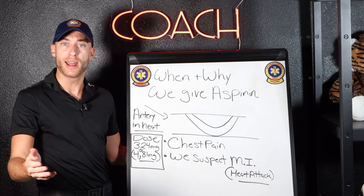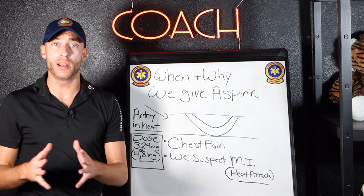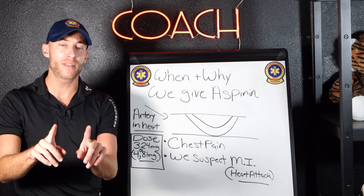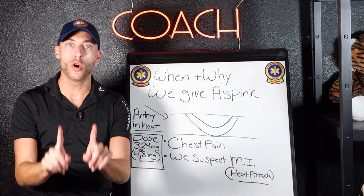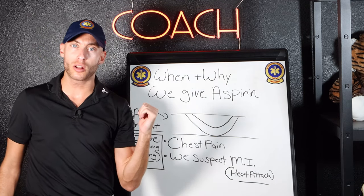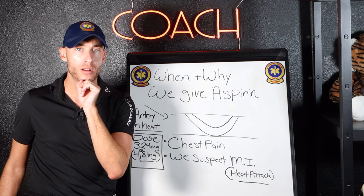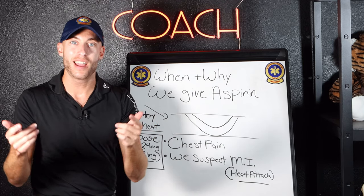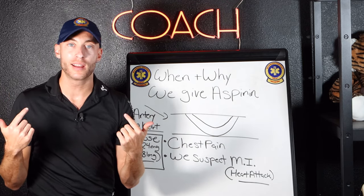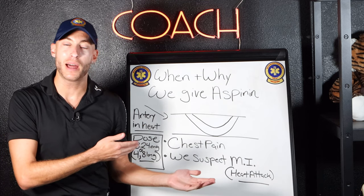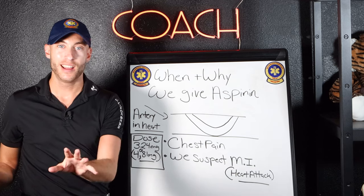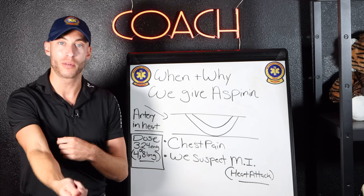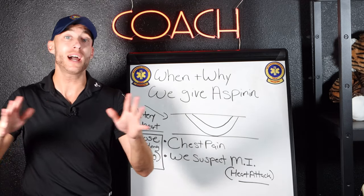A lot of people will say don't give aspirin if someone's bleeding — don't give somebody aspirin if they have a GI bleed. But what about if they have a stroke? Do we give aspirin for a stroke? No, we don't. Why? Because we don't know if it's an ischemic stroke or a hemorrhagic stroke. If they have bleeding going on in their brain and then we give aspirin, that patient can't clot anymore. This is why with GI bleeds, with any bleeding patients, we don't give them aspirin. That's a contraindication — meaning why we would not give aspirin.